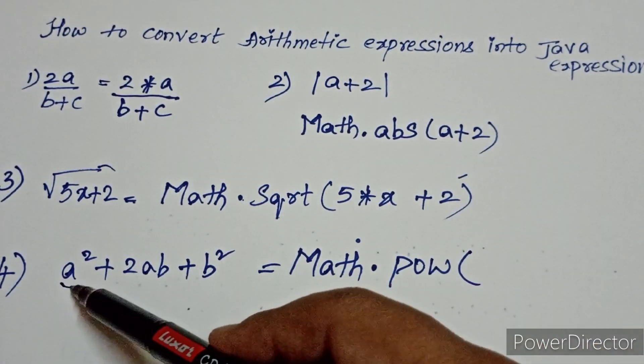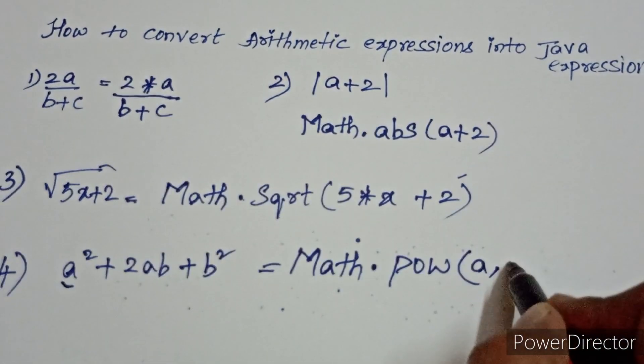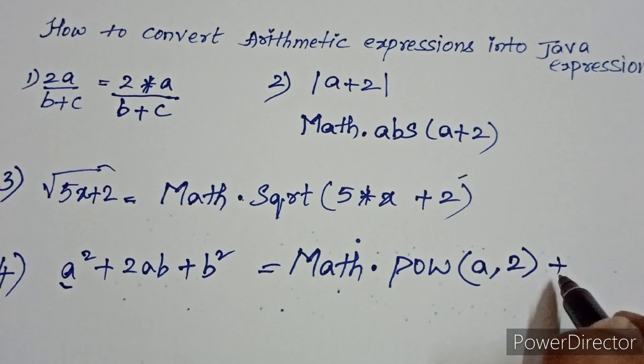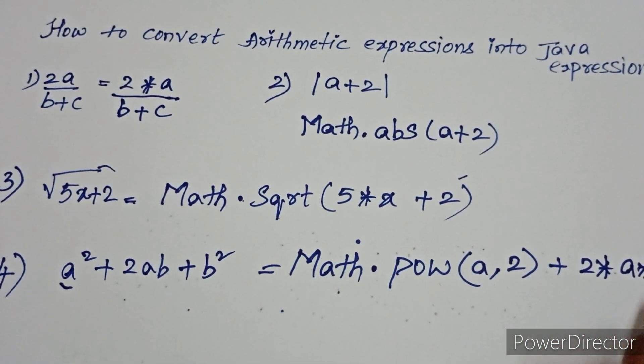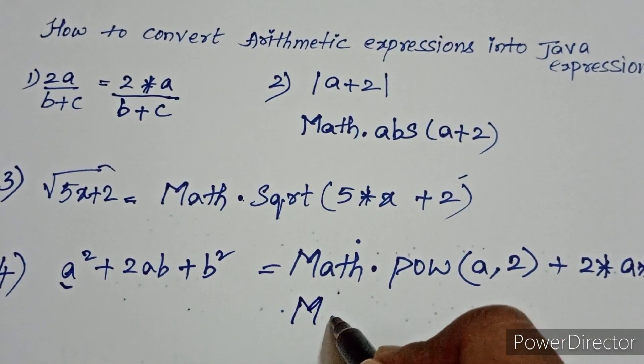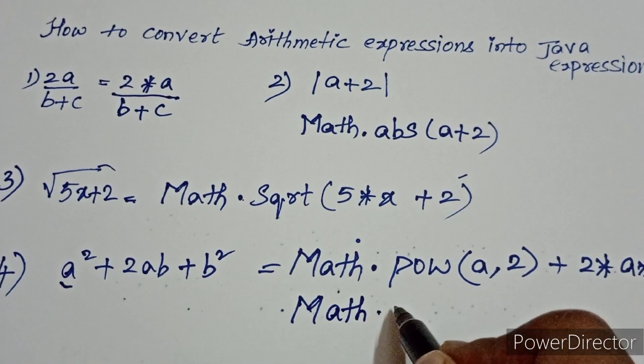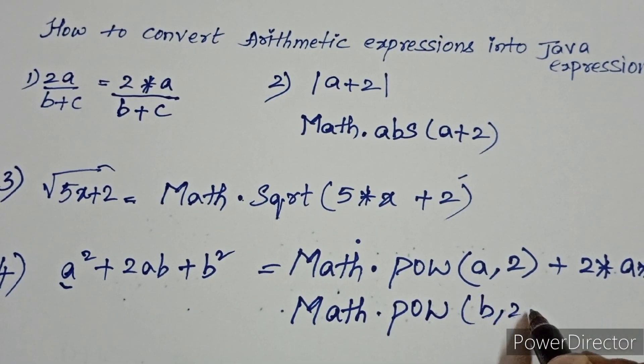First, you write the base a comma, then the power 2, plus 2 into a into b, plus here you have b square. Write Math dot pow of b comma 2.